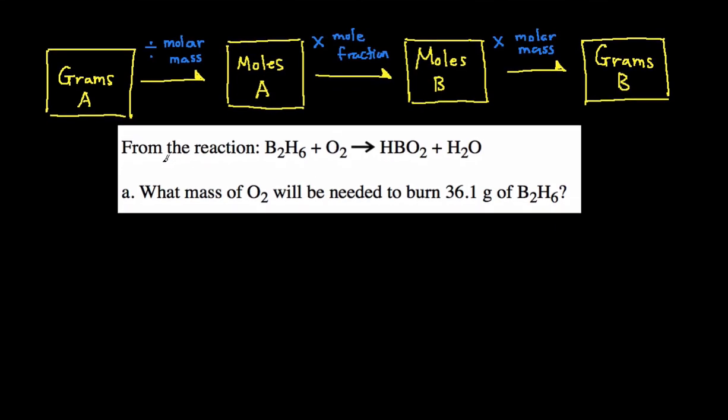So let's see what this example is asking us. It tells us this reaction right here and is asking what mass of O2 will be needed to burn 36.1 grams of B2H6. So let's identify what's A and what's B. A is going to be what's given, so that means this is going to be A because we're given a certain amount of grams of it. And then B is going to be O2 because that's the unknown, that's what we're trying to solve for.